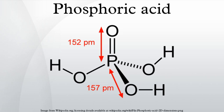Phosphoric acid is produced industrially by two general routes: the thermal process and the wet process, which includes two sub-methods. The wet process dominates in the commercial sector. The more expensive thermal process produces a purer product used for applications in the food industry. Wet process phosphoric acid is prepared by adding sulfuric acid to tricalcium phosphate rock, typically found in nature as apatite.